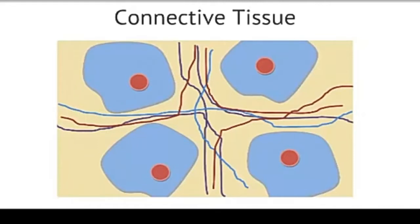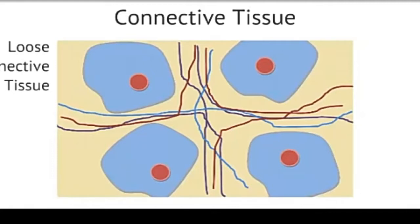The subtypes include loose connective tissue, fibrous or dense connective tissue, adipose tissue, cartilage, bone, and even blood. Loose connective tissue is the most widespread of the connective tissues and connects epithelial tissue to their underlying tissues. Loose connective tissue is also what holds some of the internal organs in place within the body cavity.